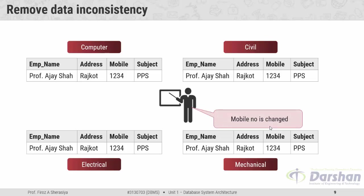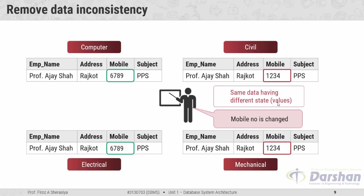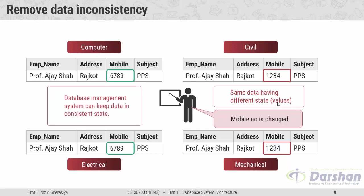In a file based system we need to change this mobile number at four different locations: in the computer's file, in the electrical department's file, in the civil department's file, and in the mechanical department's file. Suppose the computer and electrical departments changed it but civil and mechanical departments forgot to change the mobile number. In such cases the same data has different values at different locations — the same faculty's mobile number value differs by location — and the database enters an inconsistent state. But if we use DBMS, it keeps our data in a consistent state because data is stored centrally at one location, so we only need to change the mobile number at one place.